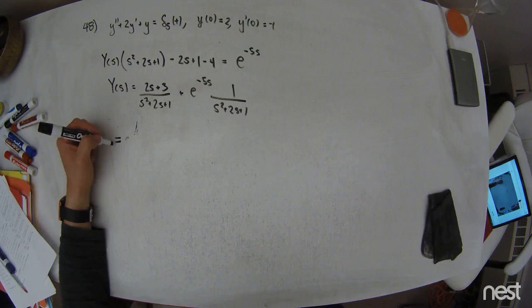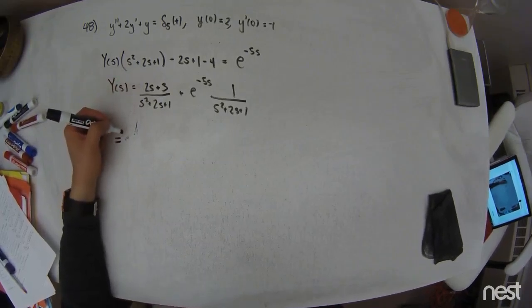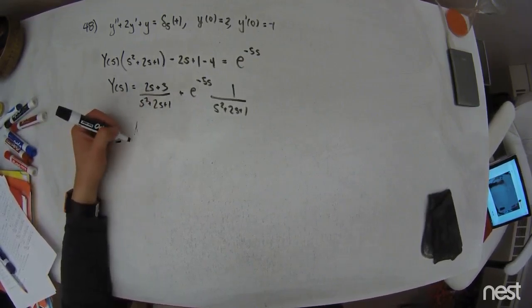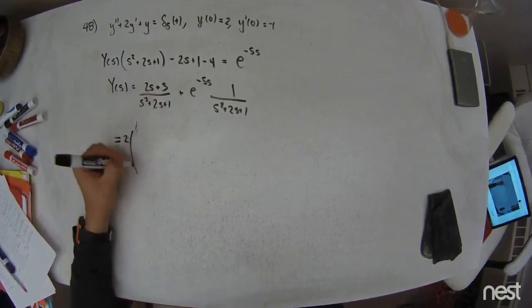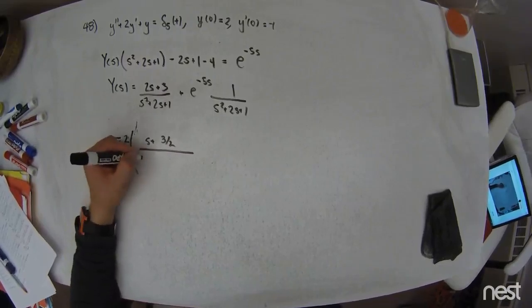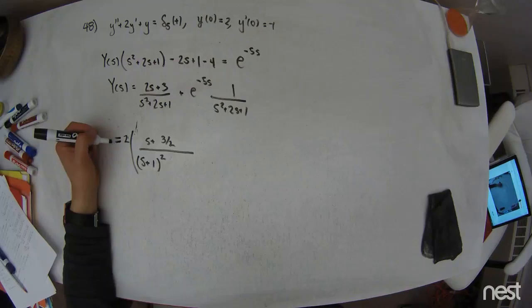I'm going to complete the square in the denominator. After I complete the square in the denominator, I'm going to factor off this 2. And then I'm going to try to get whatever linear term is in the denominator after square completion in the numerator. So I'll factor the 2 off first, leaving me with S plus 3 halves in the numerator. And then I'll complete the square in the denominator to get S plus 1 squared.